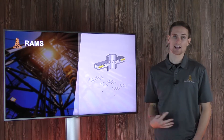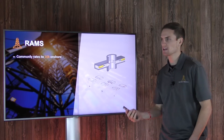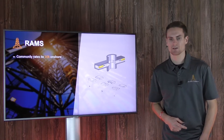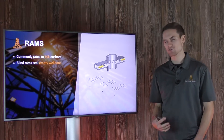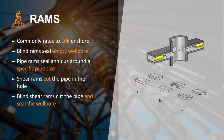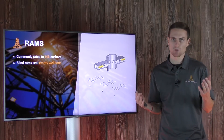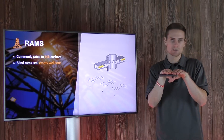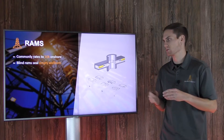Next up is going to be rams. Rams are commonly rated to about 10,000 PSI for onshore applications. The first type is what we call a blind ram, pictured here in A — this image from Wikipedia shows the different types of rams. A blind ram is going to seal across an empty wellbore — two rubber elements basically coming together to completely seal off the hole when there's no pipe in it.